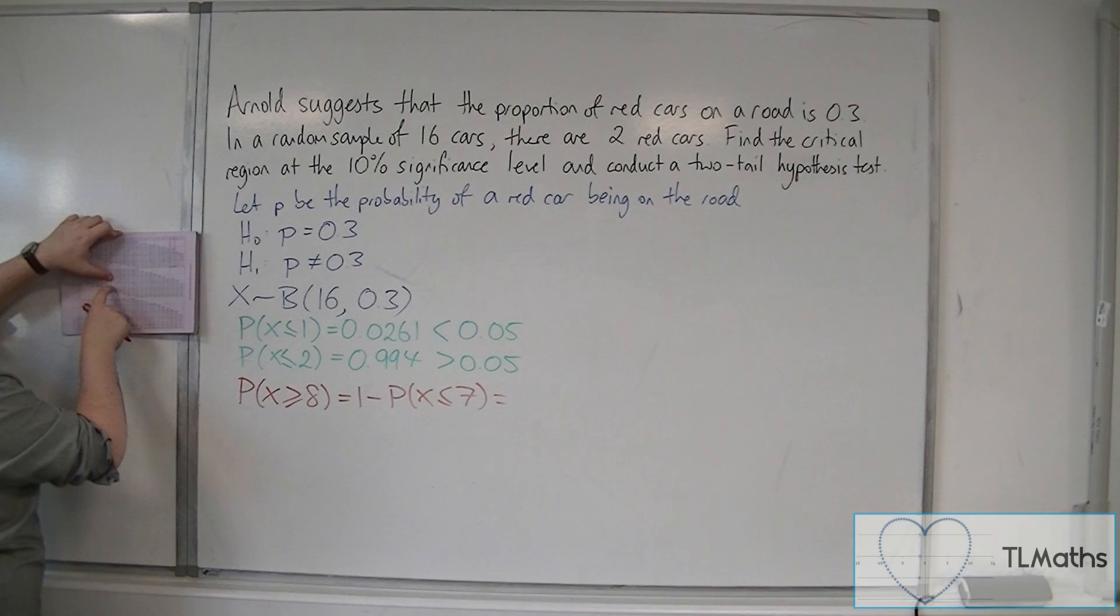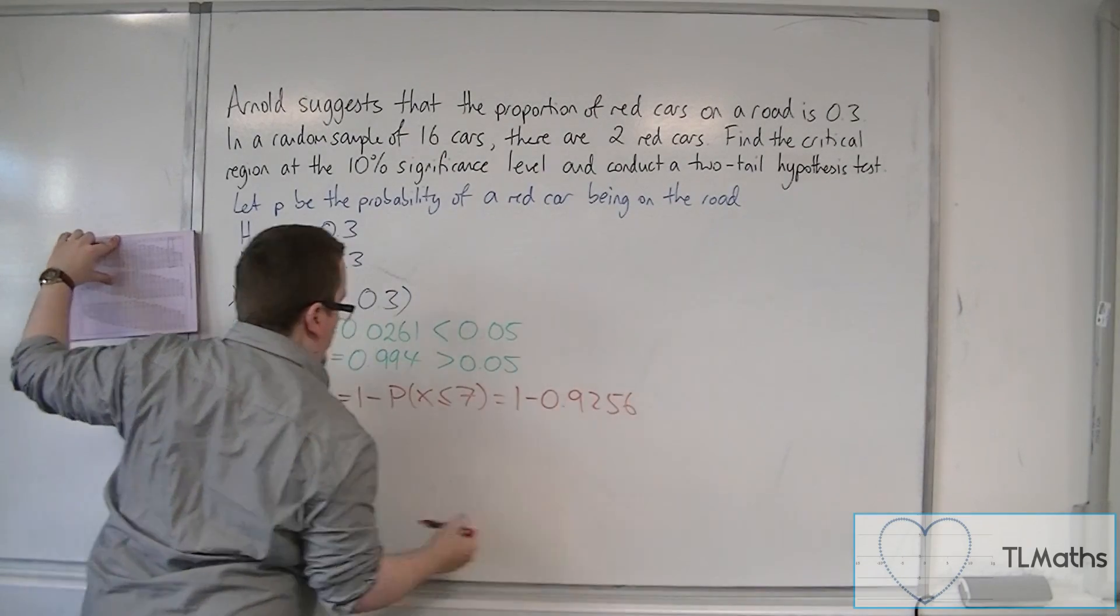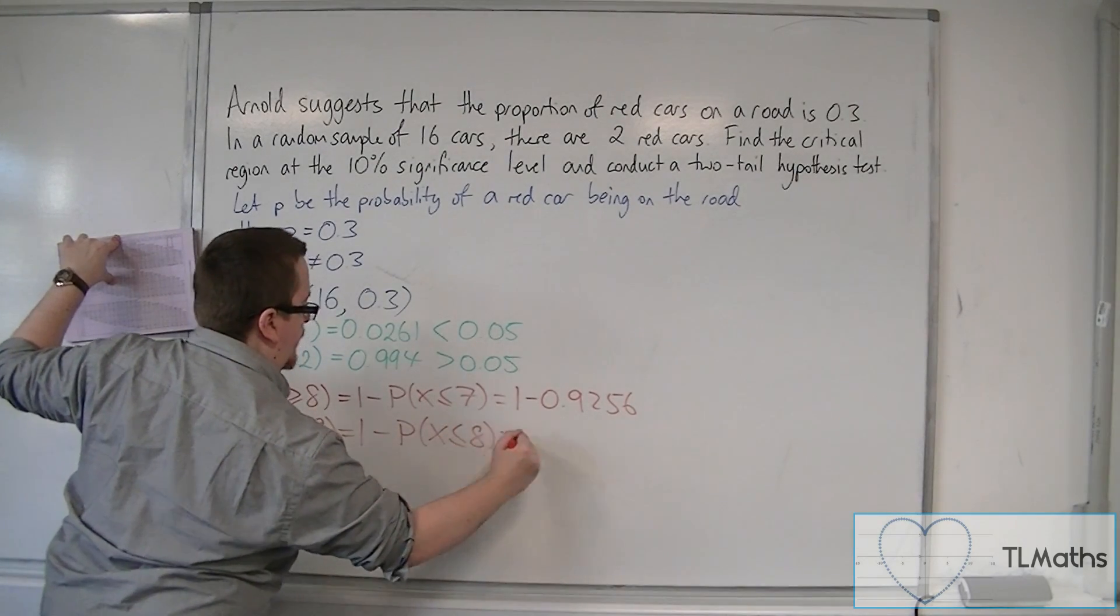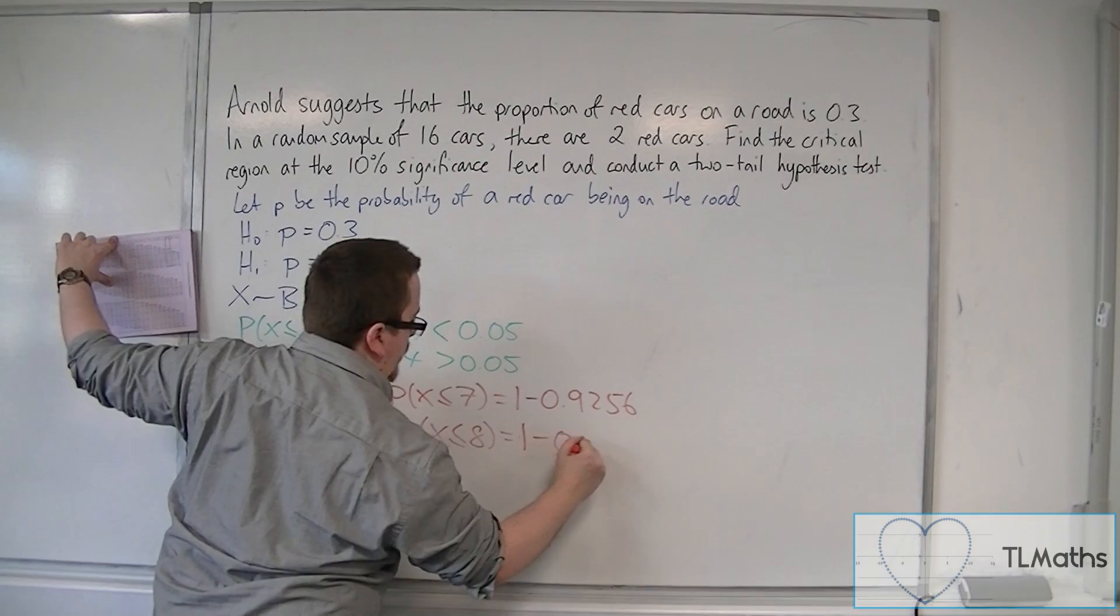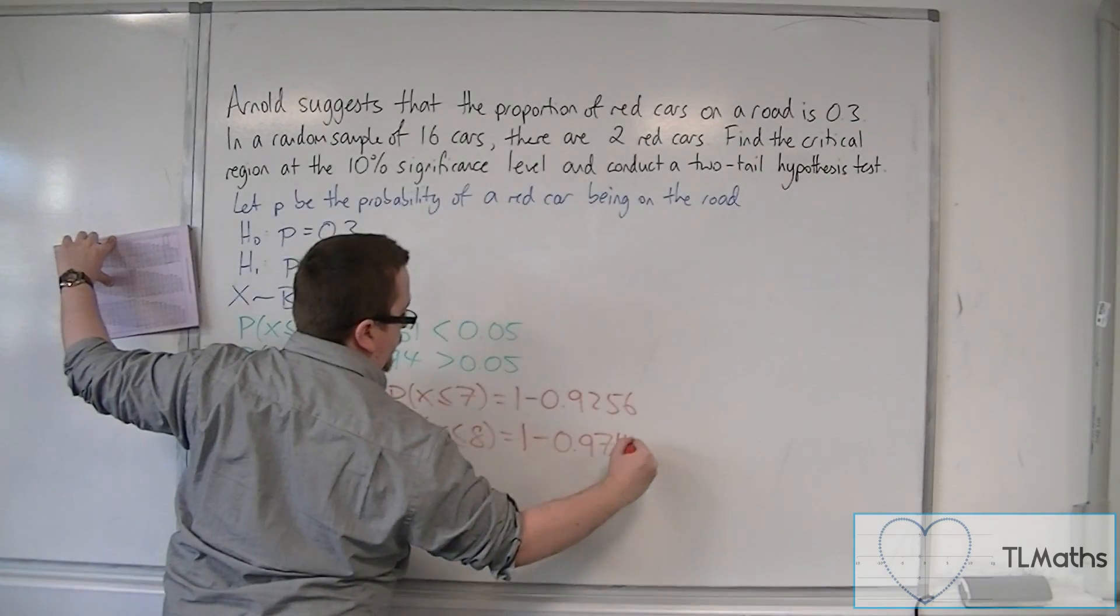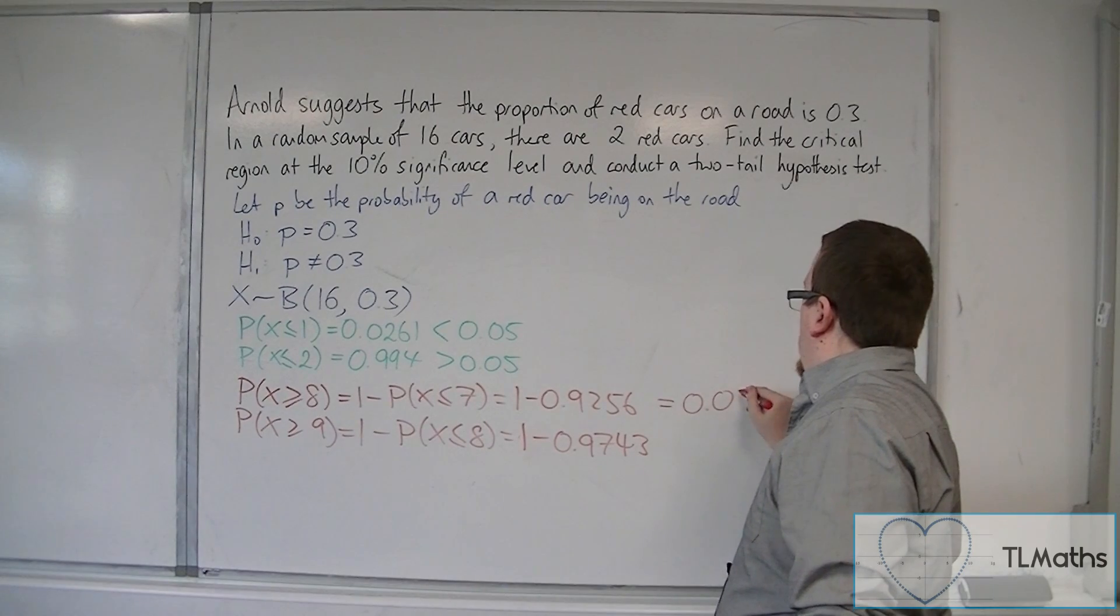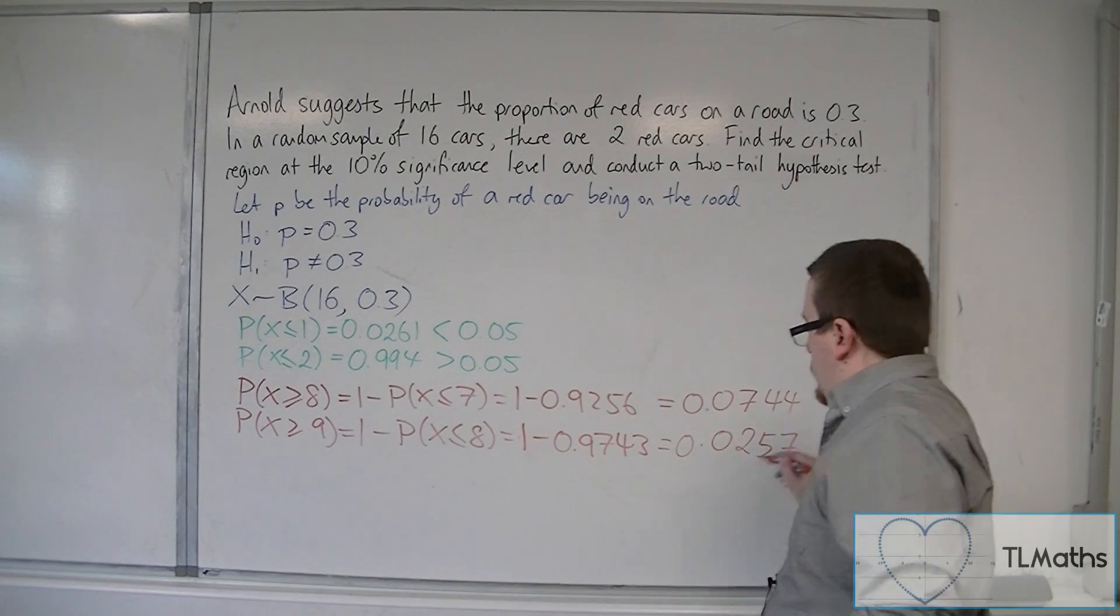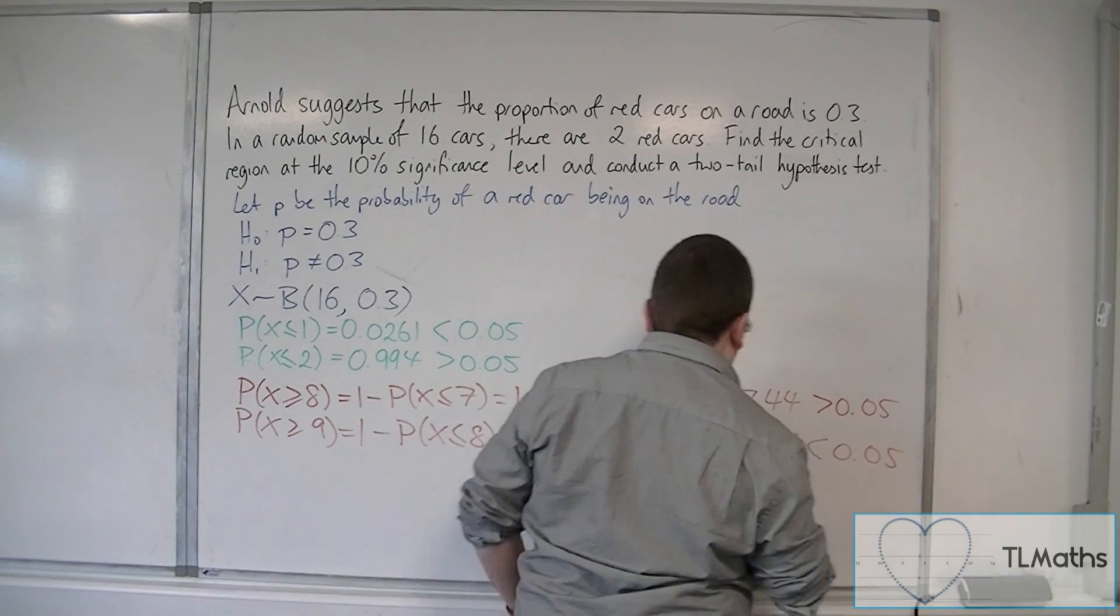I see that the crossover is between 7 and 8 here, so I need to look at 8 and 9. That's 1, take away 0.9256. And the probability of X being greater than or equal to 9 is 1, take away the probability of X being less than or equal to 8. So, 1 take away 0.9743. So, that's 0.0744 and 0.0257. One of these is greater than 5% and one is less than 5%.